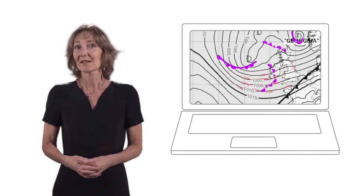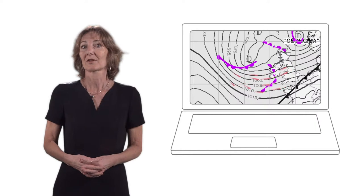Jet streams are associated with mid-latitude low pressure areas. In very general terms, the movement of air from high to low pressure will lead to the formation of jet streams at high altitude.